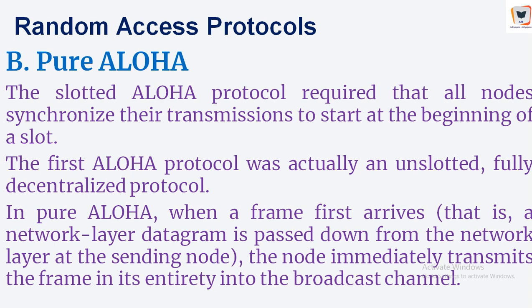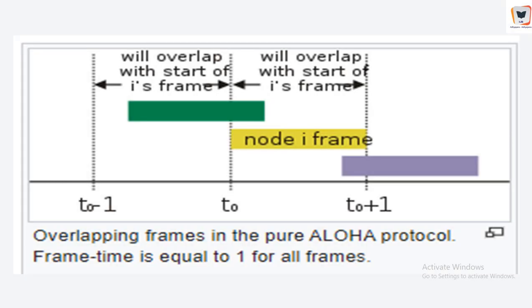To determine the maximum efficiency of pure Aloha, we focus on an individual node, making the same assumptions as in our slotted Aloha analysis: the frame lengths are the same, the data rate of the channel is the same, and we take the frame transmission time to be the unit of time. At any given time, the probability that a node is transmitting a frame is P. Suppose this frame begins transmission at time T-naught.